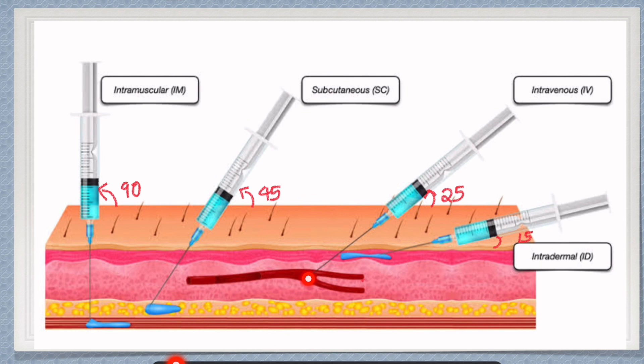For intravenous injections, in order to reach the vein, after palpating the vein, position the needle at a 25-degree angle of inclination. And for intradermal injections, use a 15-degree inclination to reach the tip of the needle just into the dermal layers of skin.